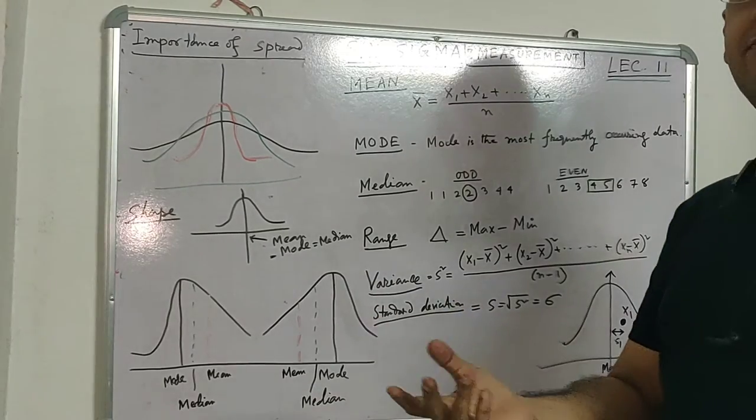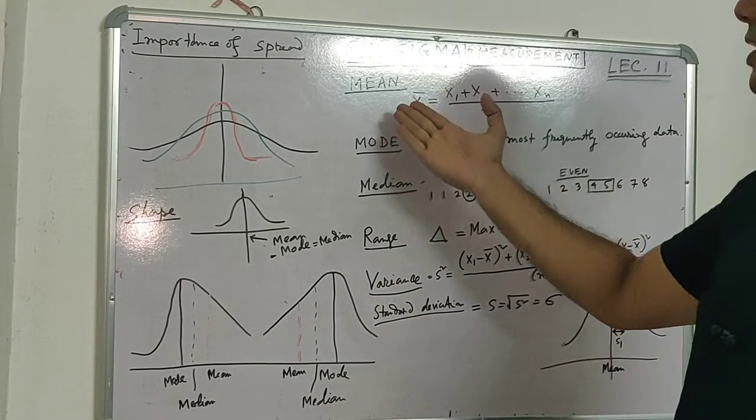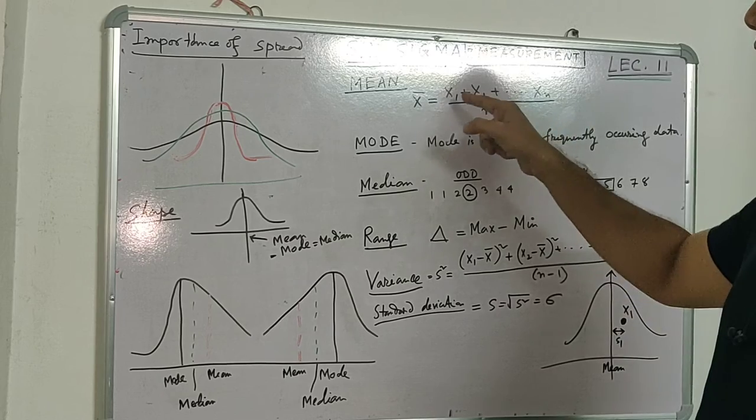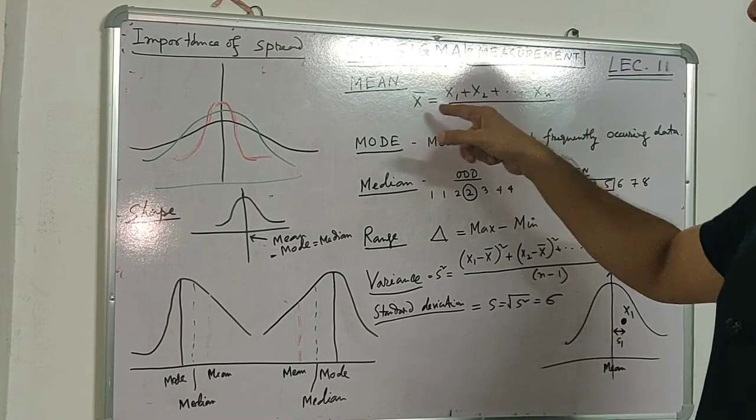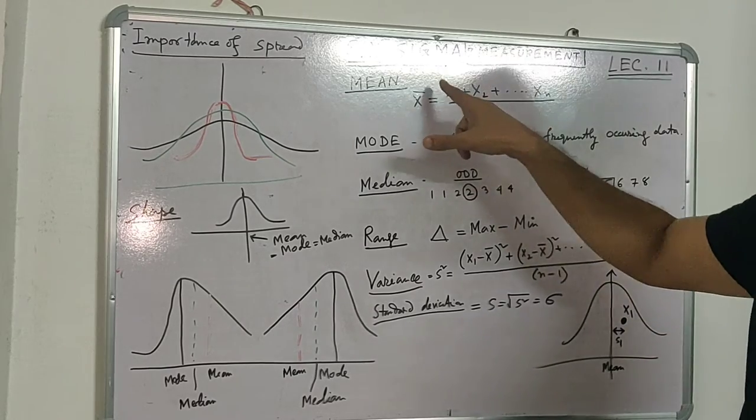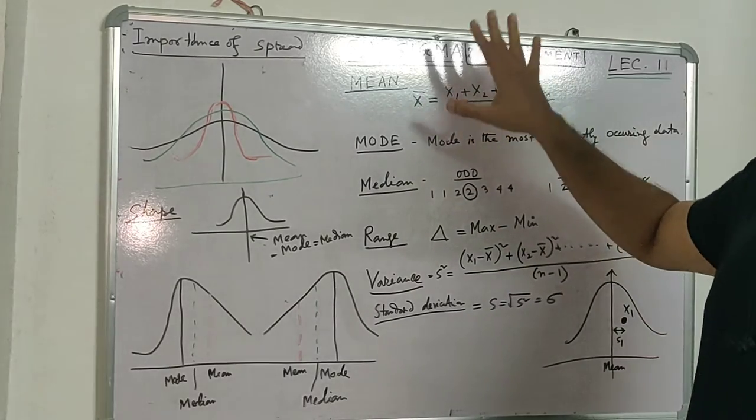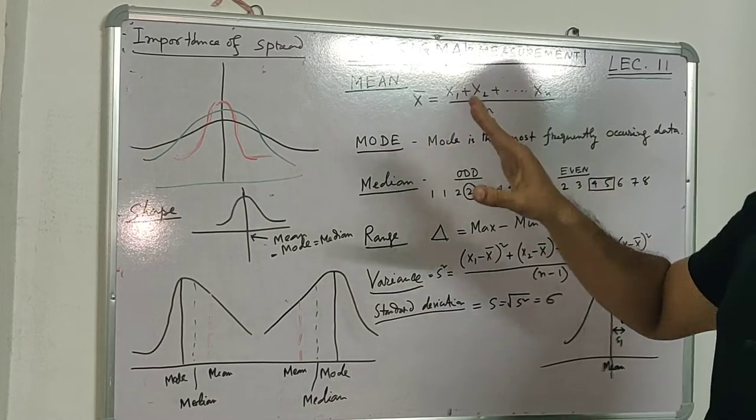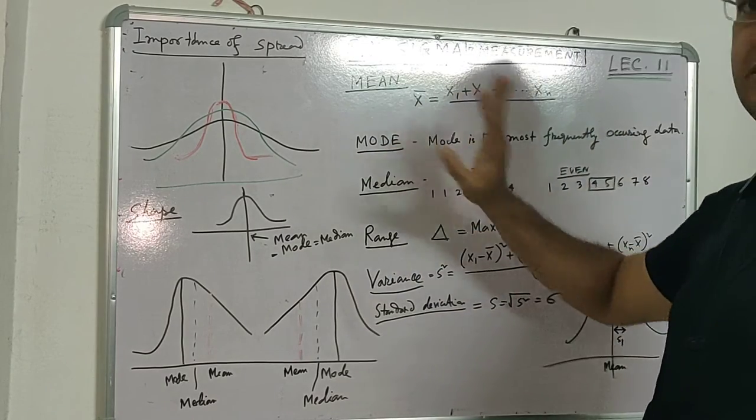As you know, mean or average—if my data points are X1 to Xn, the mean is X1 plus X2 plus all points divided by the number of data points. This is the simple mean or average for any process.